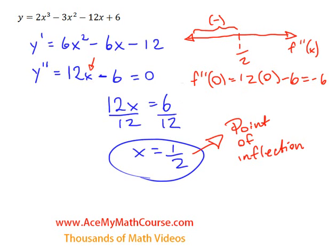But what happens to the right of half? Well, let's plug in another value here. Plug in 1. So f double prime of 1, that's going to be 12 times 1 minus 6. That's just positive 6. So that's positive.